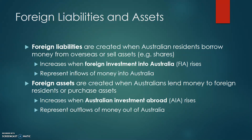Foreign assets are created when Australians lend money to foreign residents or they purchase assets. For example, if an Australian resident were to lend money to an American firm, that would be an example of an increase in foreign assets. Another example would be if an Australian investor were to buy a share in a Japanese firm, increasing ownership of that Japanese firm — that would again be an increase in foreign assets. The terminology we use to describe this flow of funds out of Australia is Australian Investment Abroad, or AIA.